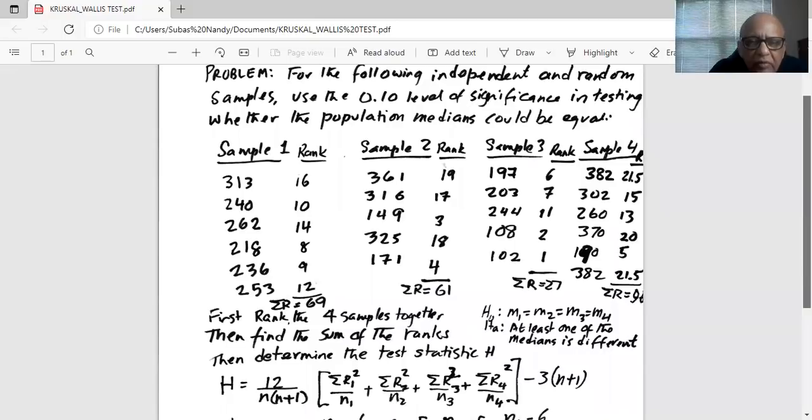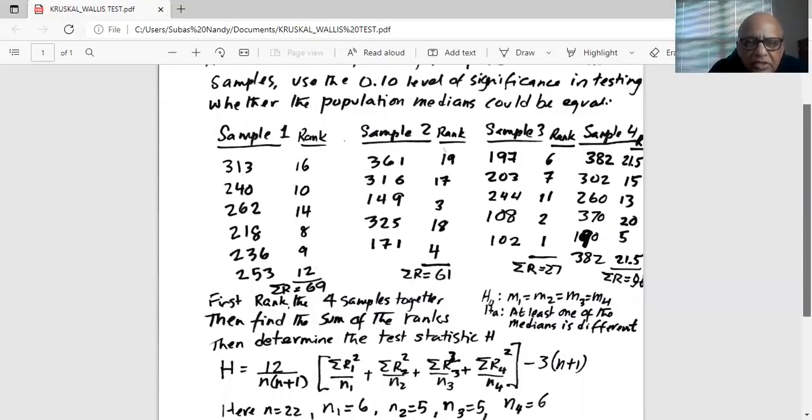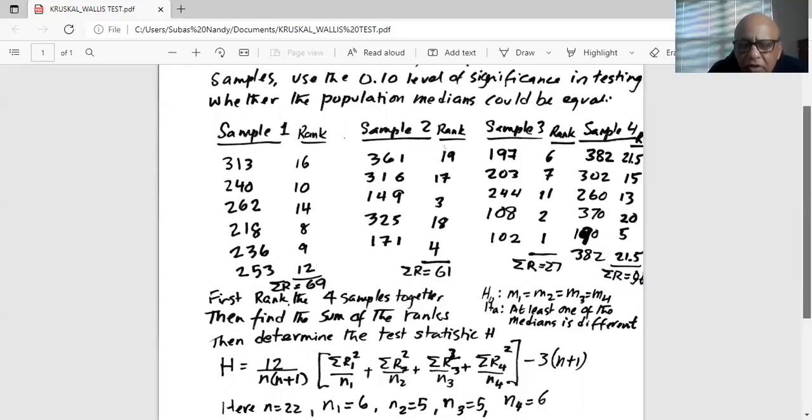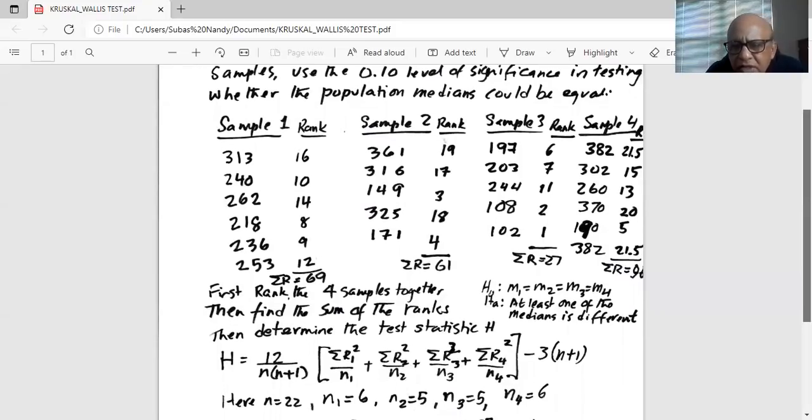Then we find the sum of individual ranks for each of the samples. For example, for sample one, sum of the ranks is 69. For sample two, sum of the ranks is 61. For sample three, sum of the ranks is 27. Whereas for sample four, sum of the ranks is 96.